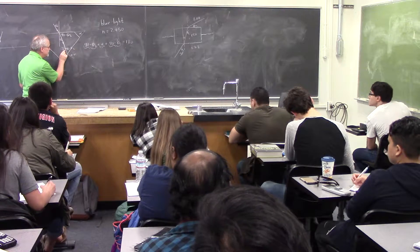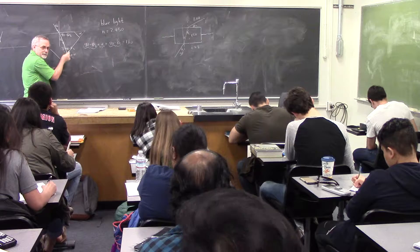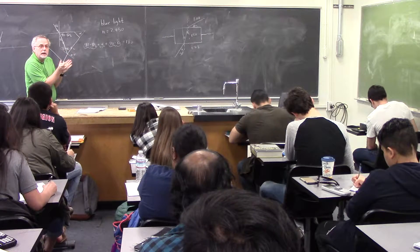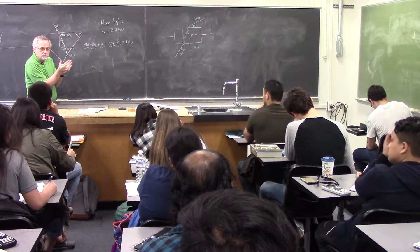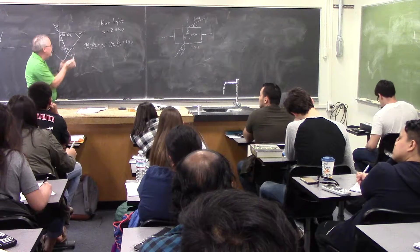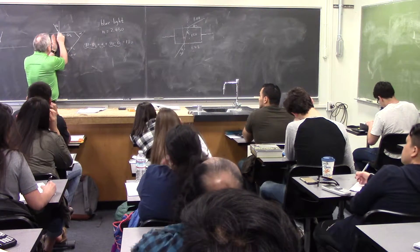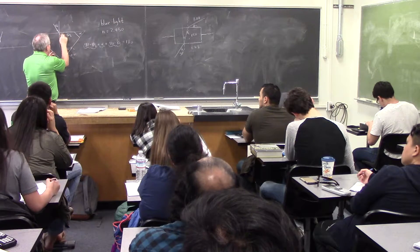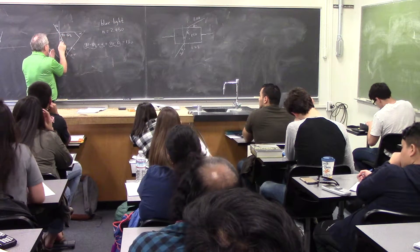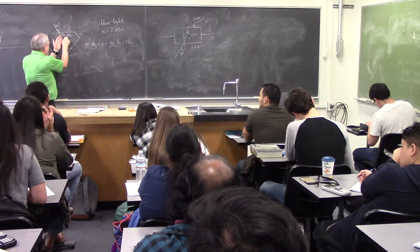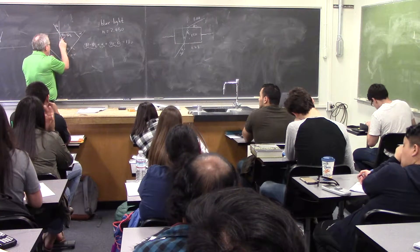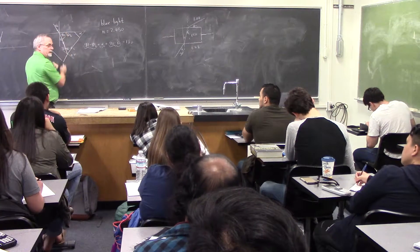This is theta_C, and the complement has to be 90 minus theta_C because they have to add up to 90. Same thing here — this is theta_B, but since the surface is flat that has to be a 90-degree angle, so if this is theta_B, that angle has to be 90 minus theta_B.